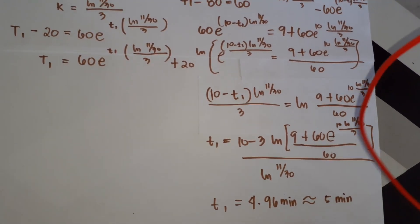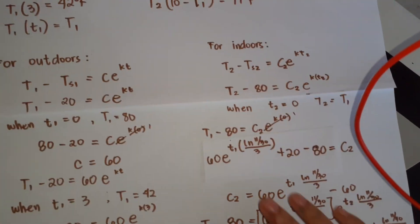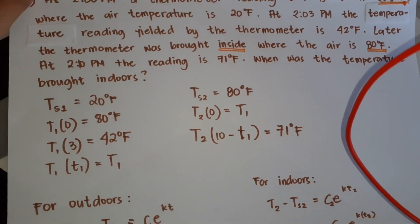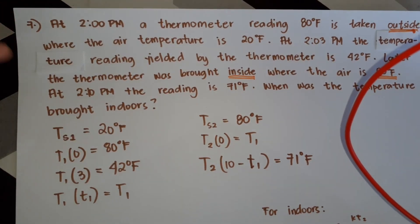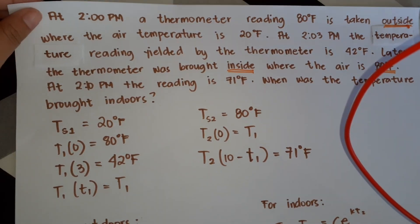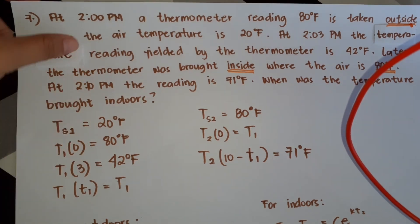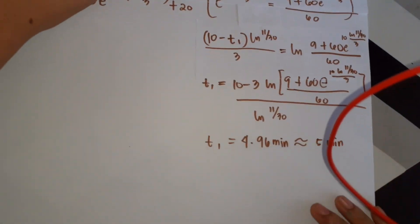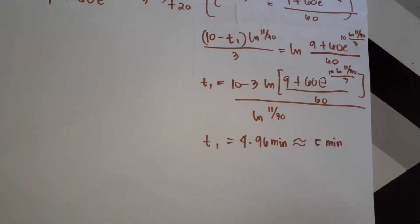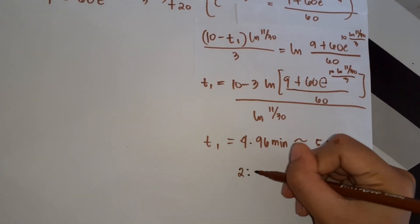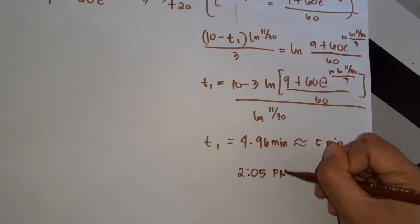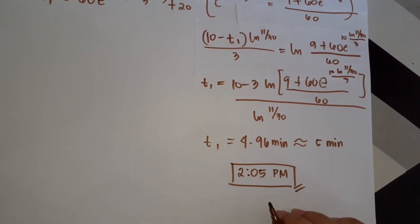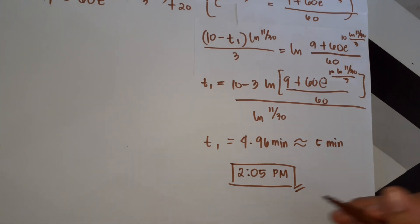Since the problem asks when the thermometer was brought indoors, and T1 is approximately 5 minutes after our time zero of 2 PM, the thermometer was brought indoors at approximately 2:05 PM.